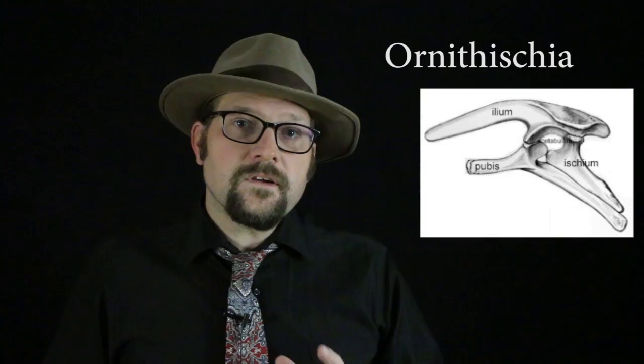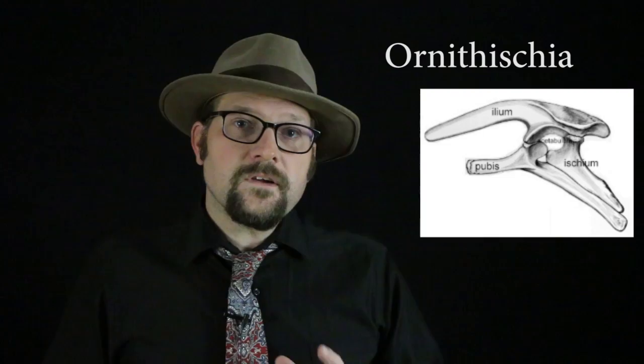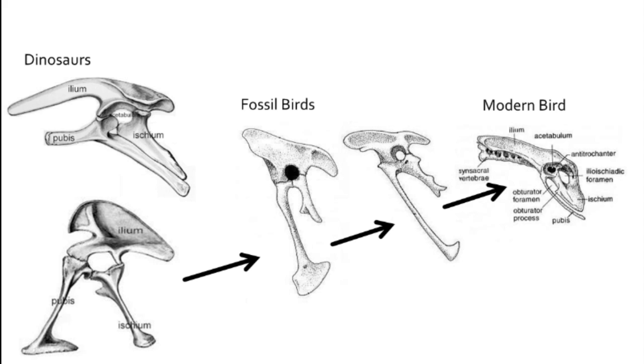Both Saurischia and Ornithischia dinosaurs have an open acetabulum. Within the Saurischia, or lizard-hip dinosaurs, the pubis bone projects forward, while in the Ornithischia the pubis bone projects posteriorly, with a pre-pubis process anterior to the acetabulum or hip socket. This condition somewhat resembles the hip found in birds, although as we will learn, birds arose from the Saurischian dinosaurs.